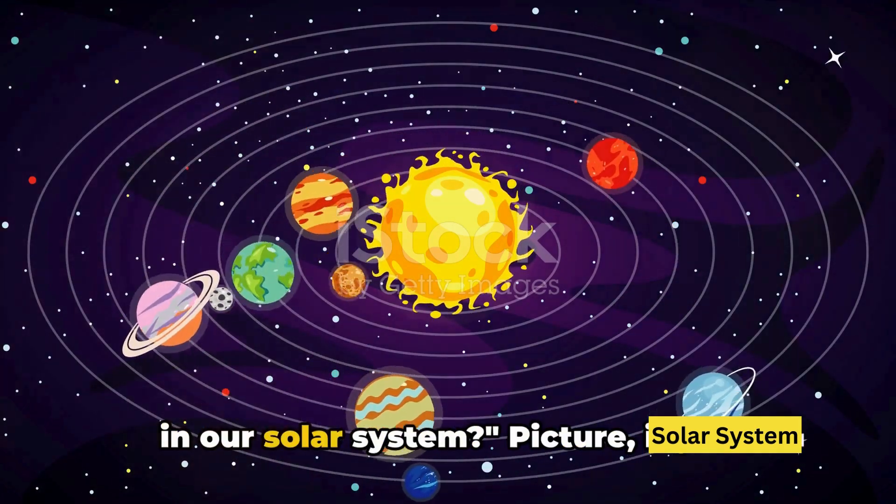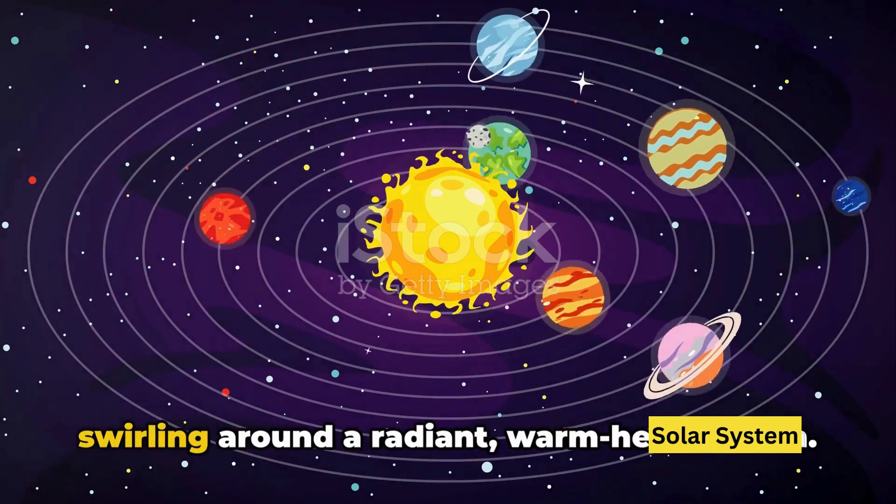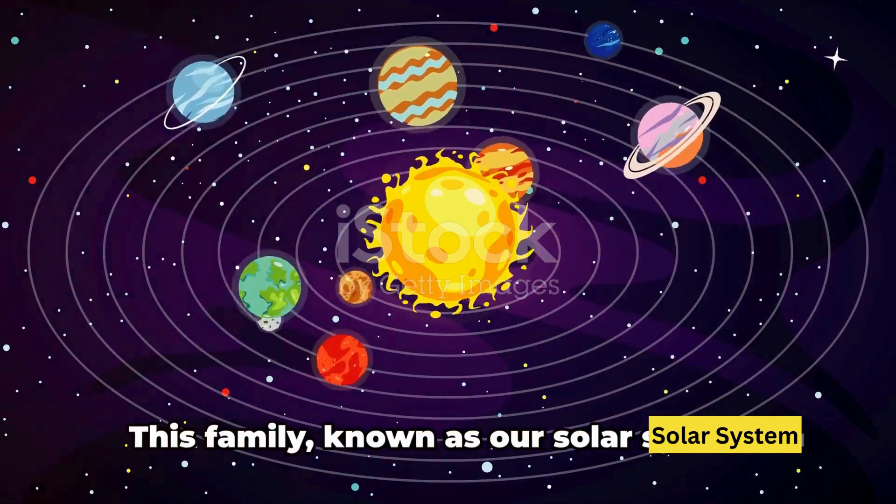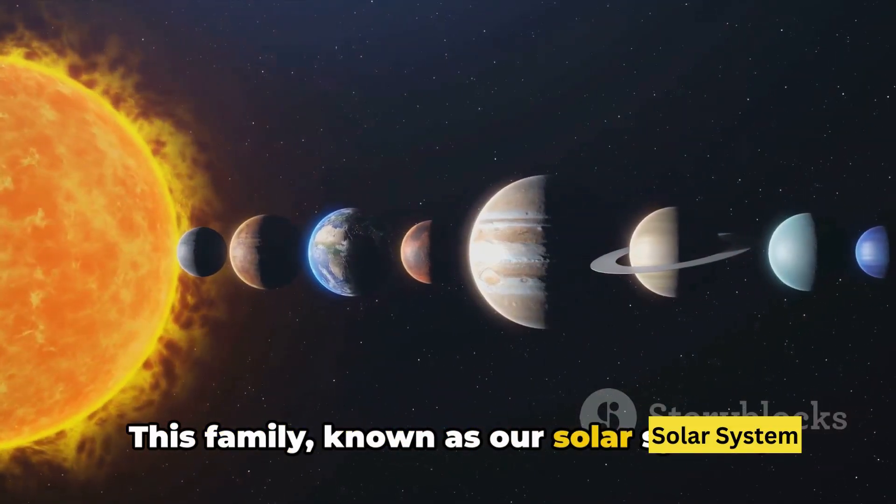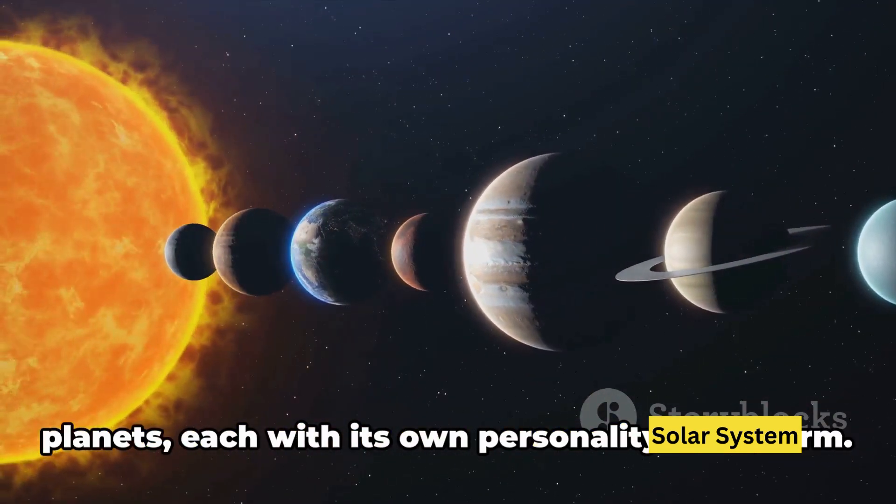Have you ever wondered about the planets in our solar system? Picture, if you will, an enormous cosmic family, all swirling around a radiant, warm-hearted sun. This family, known as our solar system, is a bustling neighborhood of eight unique planets, each with its own personality and charm.